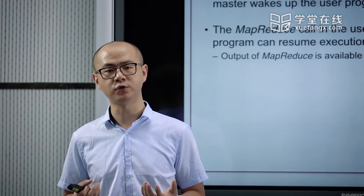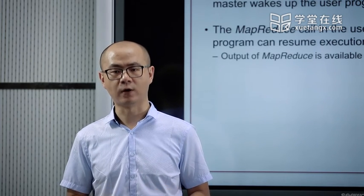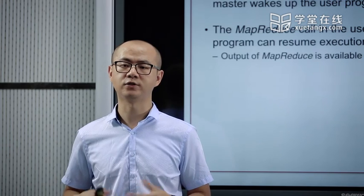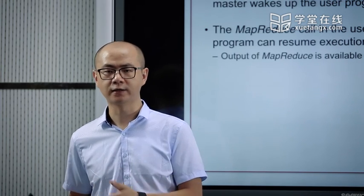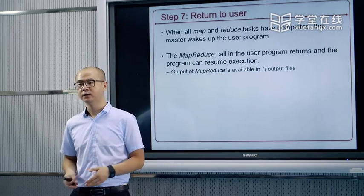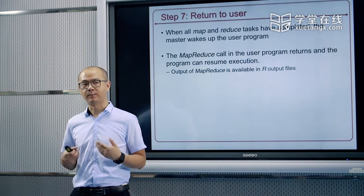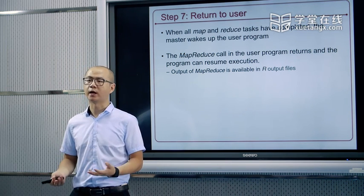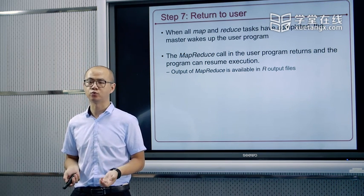完成这一步之后，整个数据处理任务就基本结束了。Reduce结束之后，根据用户对reduce的编写，会把最终生成的结果写入到reduce节点的磁盘上，写入到分布式文件系统里面。用户就可以通过分布式文件系统进行数据访问，得到想要的结果。再往后可以进一步迭代另一个MapReduce任务，或者就已经得到了最终需要的数据集。